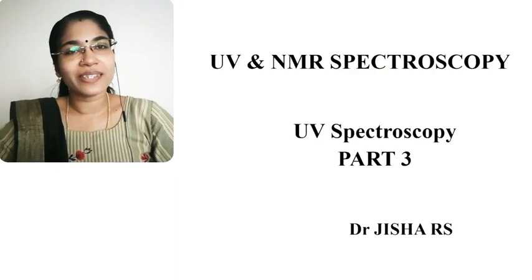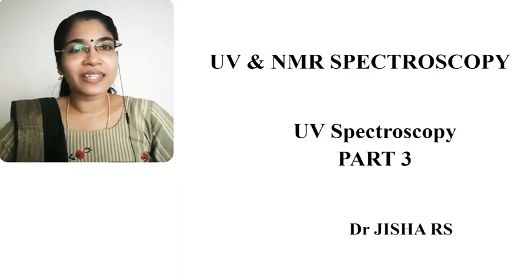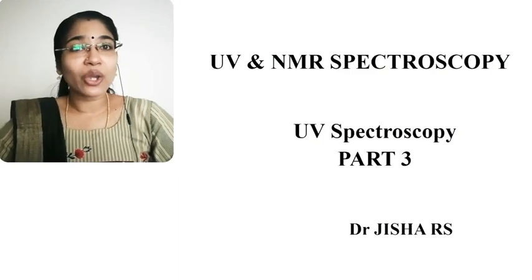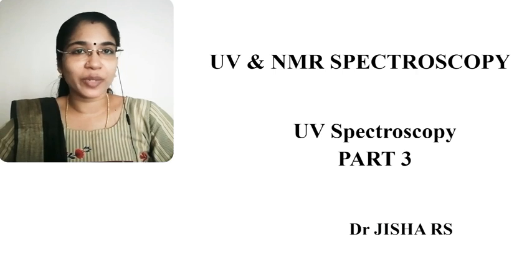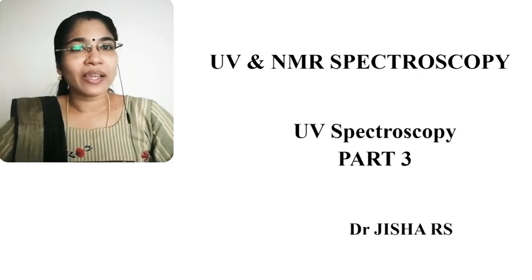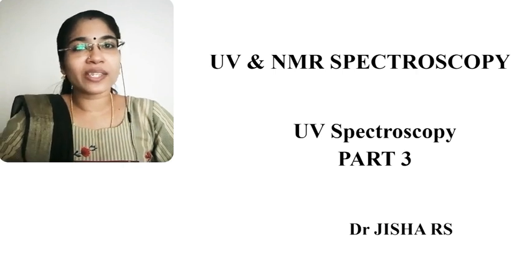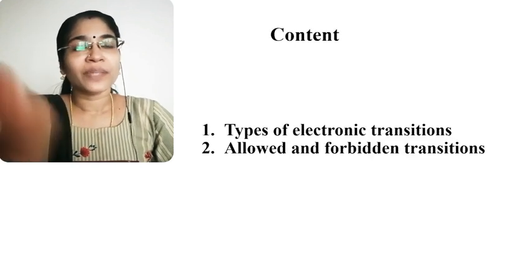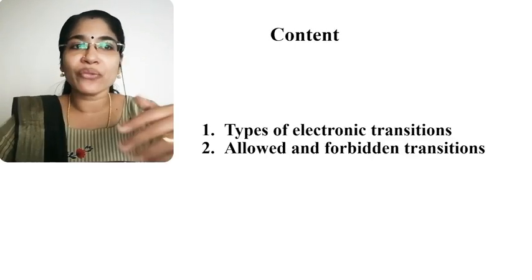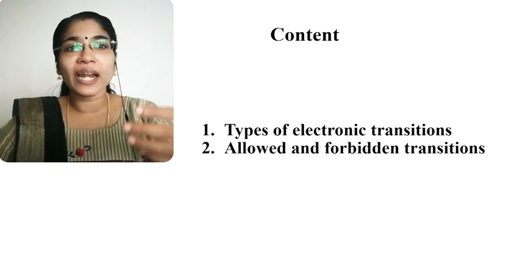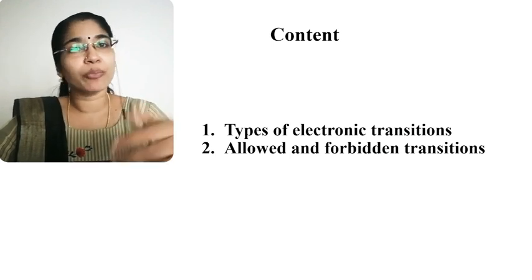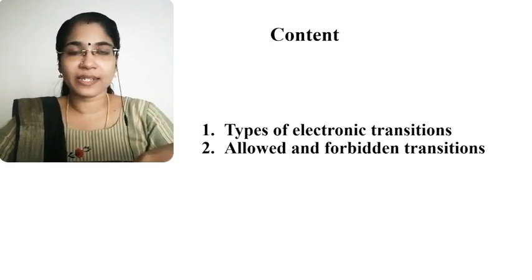Hi students. Last class we discussed the working of a UV visible spectrophotometer. Today we are going to discuss the types of electronic transitions and allowed and forbidden transitions.